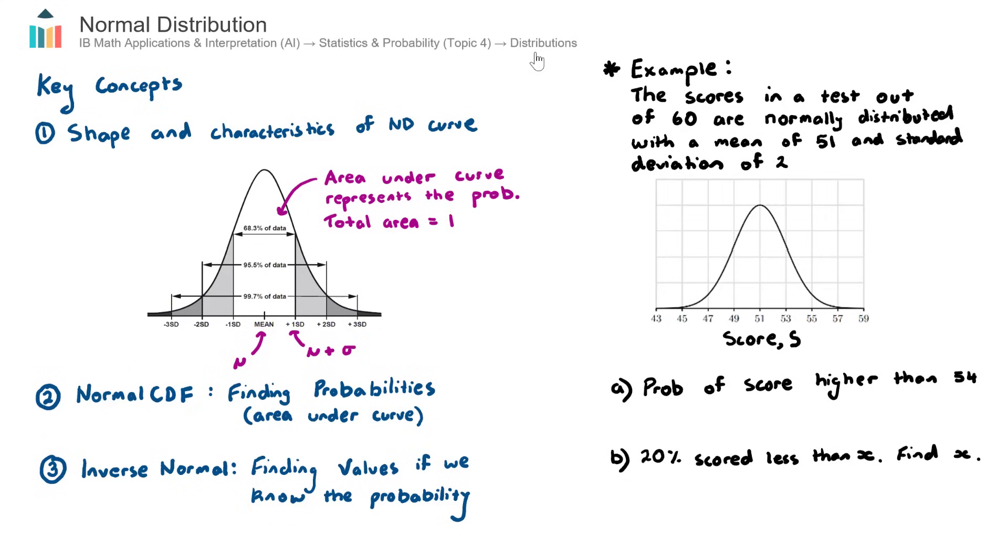Now, in the AISL course, we encounter three types of distributions: probability distribution, binomial distribution, and normal distribution. And then in the AIHL course, in addition to those three, we also encounter Poisson's distribution.